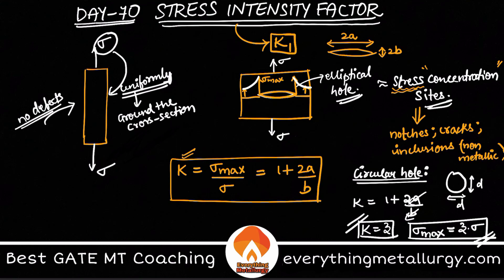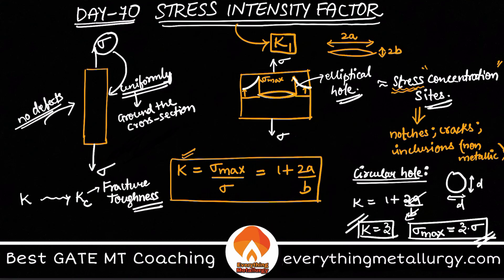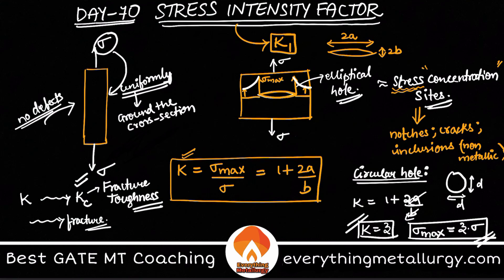This is how you can study whether the stress concentration is going to result in fracture or not. When K is tending to Kc, we call Kc the fracture toughness, also known as the critical stress intensity factor. This represents the maximum stress my material can withstand before fracture, and it can also be explained in terms of energy.